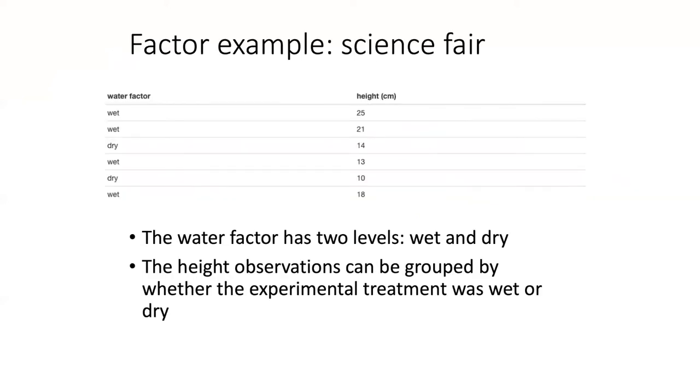An example of a factor is sort of the classic science fair experiment. You have some pots of soil and you plant beans in them, and then you give those pots varying amounts of water. Some of them you keep the soil wet, other ones you keep the soil dry, and then after a certain amount of time you measure how tall the bean plants are. So in this example, the factor for water has two levels, wet and dry.